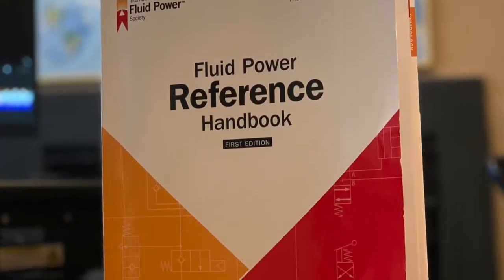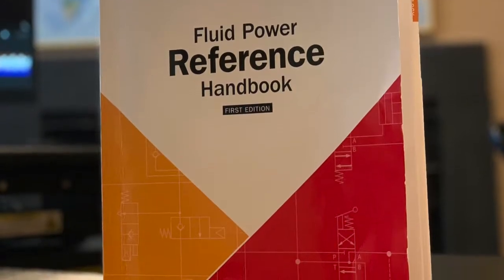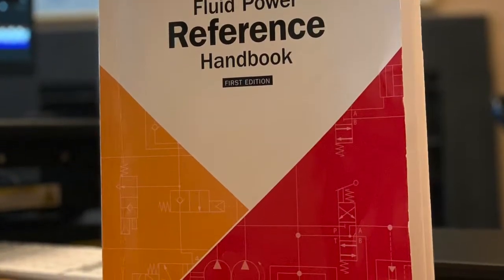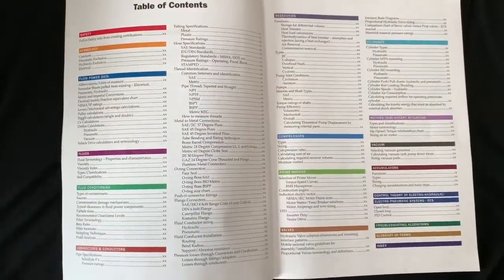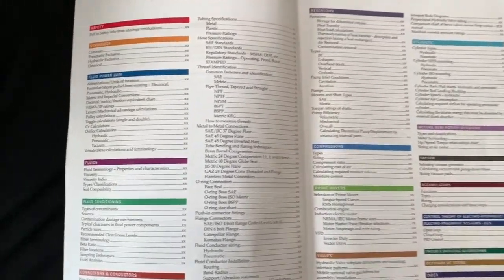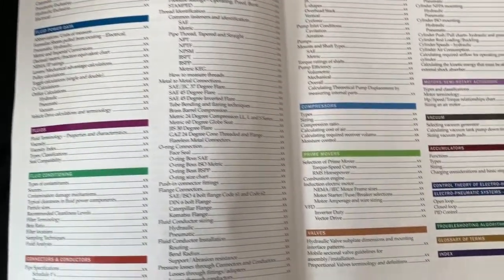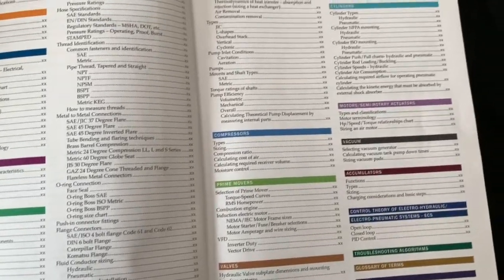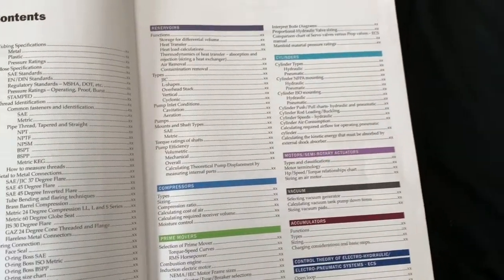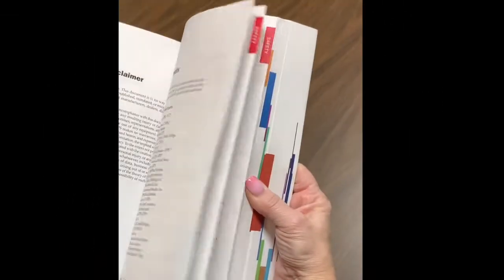What you will find in this handbook is everything a fluid power professional needs right at your fingertips and in living color. The full color index coordinates with section tabs on each page, making it easy to find the information you're looking for in this 380 page ultimate resource.